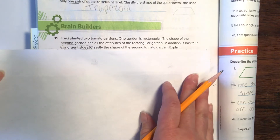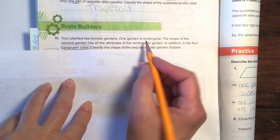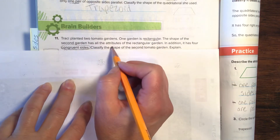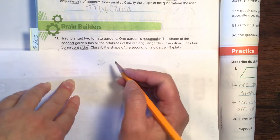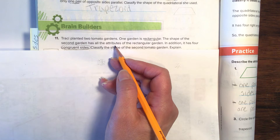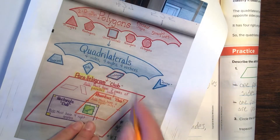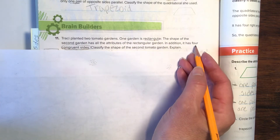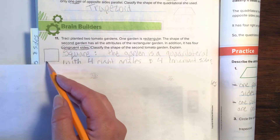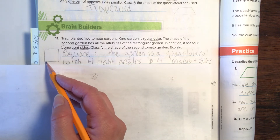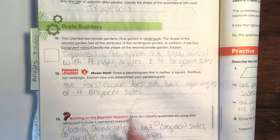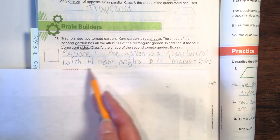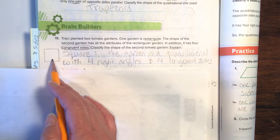This one was a fun one. Tracy planted two tomato gardens. One garden is rectangular. The shape of the second garden has all the attributes of the rectangular garden, and in addition it has four congruent sides. Classify the shape of the second tomato garden and explain. Attributes are corners, sides, and angles. If it has congruent sides, they're all the same length. So you need to draw a shape with four sides, four angles, all congruent — the garden is a quadrilateral with four right angles and four congruent sides. Congruent means same length, and that's how we explain.